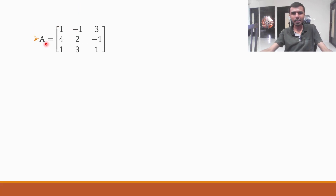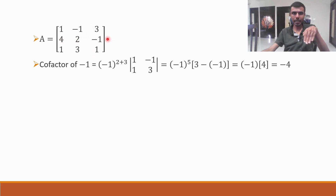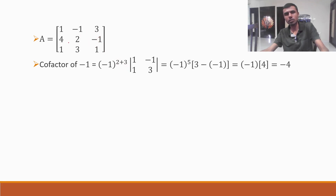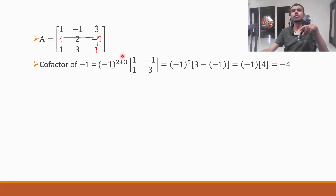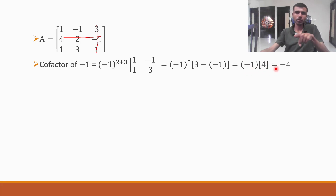Next, cofactor of minus 1 in second row, third column — position (2,3). Minus one to the power 2 plus 3, into det of [1, -1; 1, 3]. One into 3 is 3, minus one into minus one is minus one. So 3 minus minus 1 is 4. Minus one to the power odd number gives minus one. Minus one into 4 is minus 4.